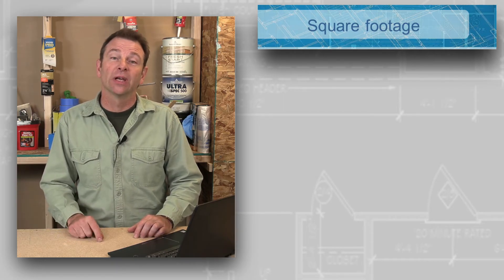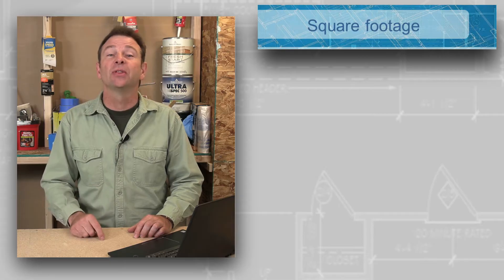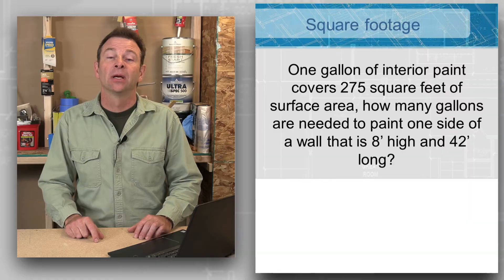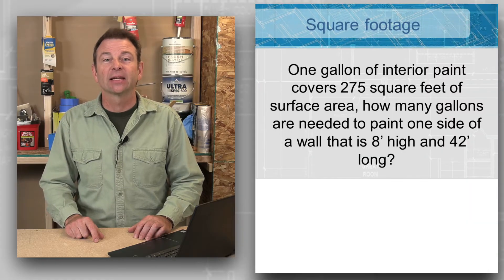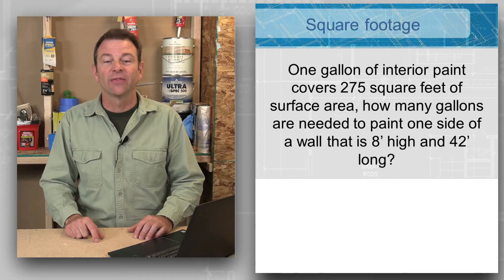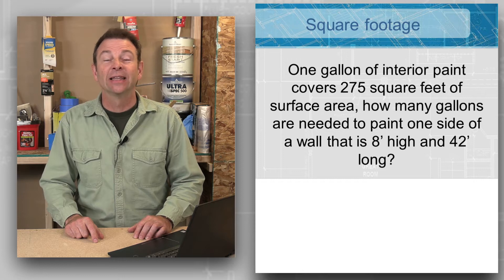Here's a word problem we can set up. I'll read it to you, then we'll set it up, then we'll solve it. One gallon of interior paint covers 275 square feet of surface area. How many gallons are needed to paint one side of a wall that is eight feet high and 42 feet long?